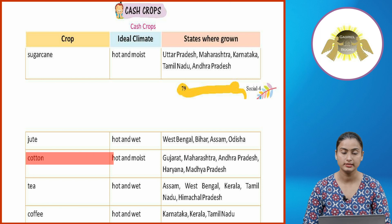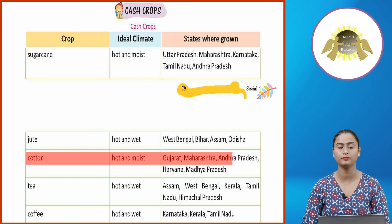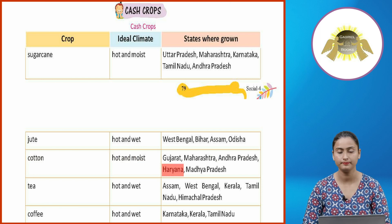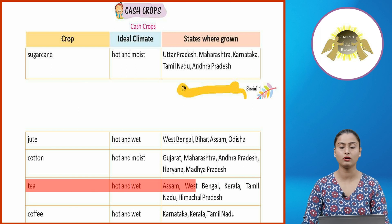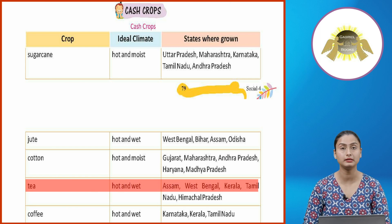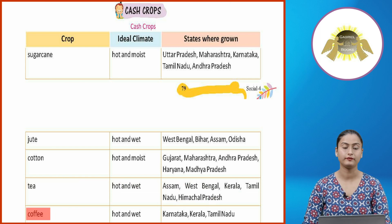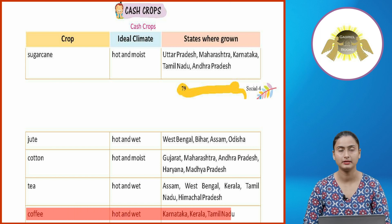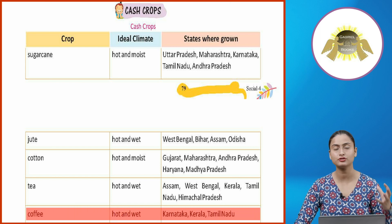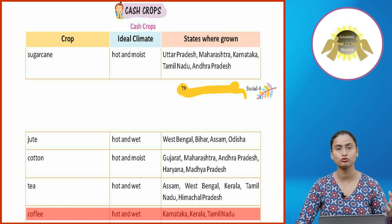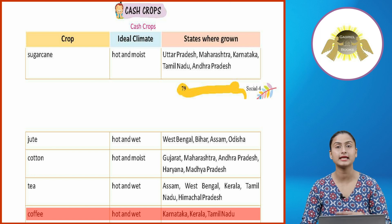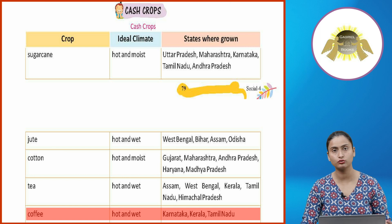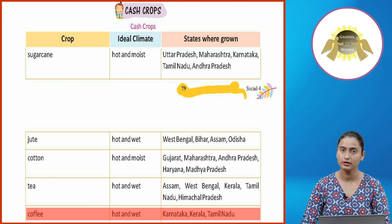Cotton grows in a hot and moist climate in Gujarat, Maharashtra, Andhra Pradesh, Haryana, and Madhya Pradesh. Tea grows in hot and wet conditions in Assam, West Bengal, Kerala, Tamil Nadu, and Himachal Pradesh. Coffee grows in hot and wet conditions in Karnataka, Kerala, and Tamil Nadu.